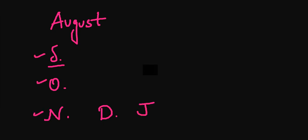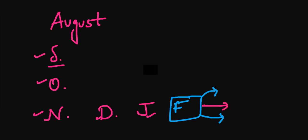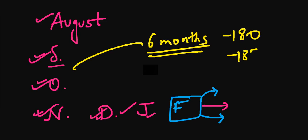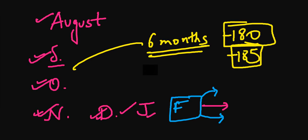Starting from August, you have August, September, October, November, December, January, and then about 15 days into February. So approximately you have six months - around 180 to 185 days - for preparing for GATE 2025.